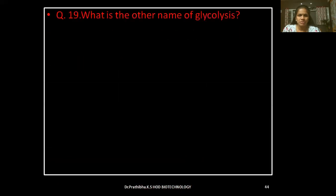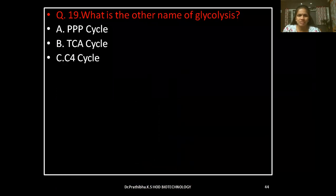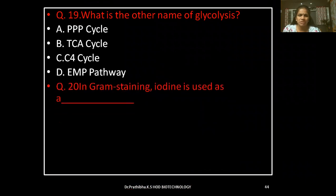Question 19: What is the other name of glycolysis? TPP cycle, TCA cycle, C4 cycle, or EMP pathway.